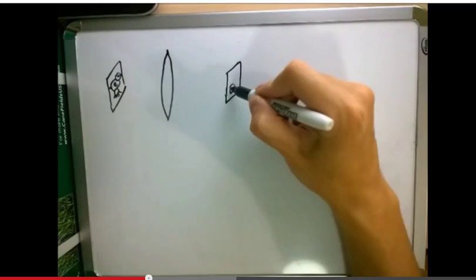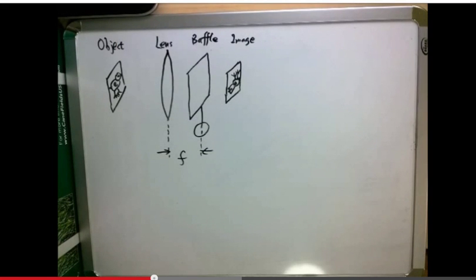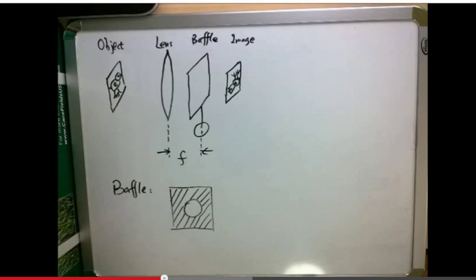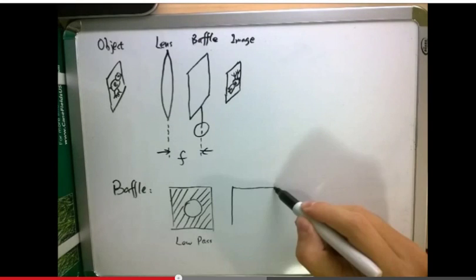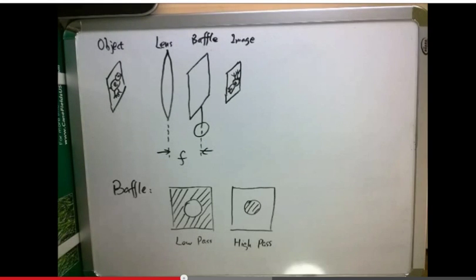By placing a baffle on the Fourier plane, we can design different filters for the imaging system. The central path baffle is equivalent to a low-pass filter, which will blur the image. The baffle that blocks the central light is equivalent to a high-pass filter, which will make the boundary of the object clearer.